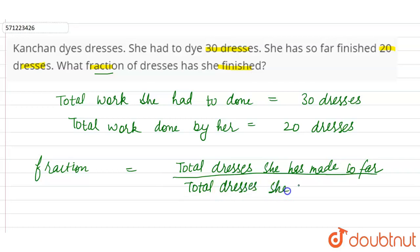She has to make. So total dresses she has done so far is 20, and total work she has to do is 30. So this is equal to - cancellation - zero will be cancelled with zero. Now two by third. So two by third of the work has been done by Kanchan.